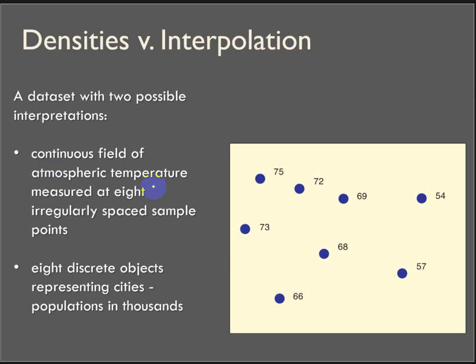Okay, so a continuous field of atmospheric temperature measurements at eight irregularly spaced sample points. They could be weather stations. They could be cities. So it could also be population in thousands, or it could be a death rate or a live birth rate or something like that.